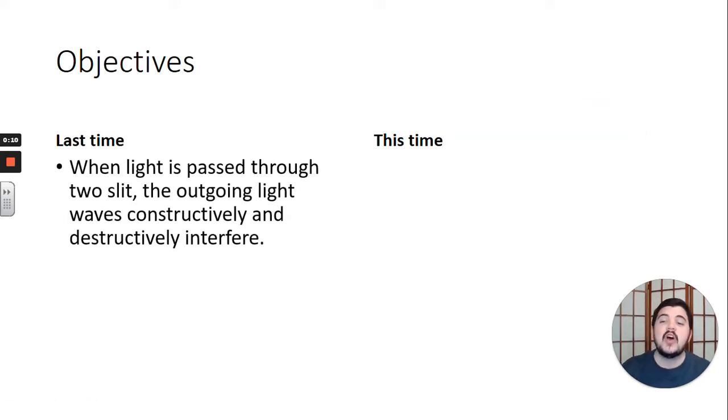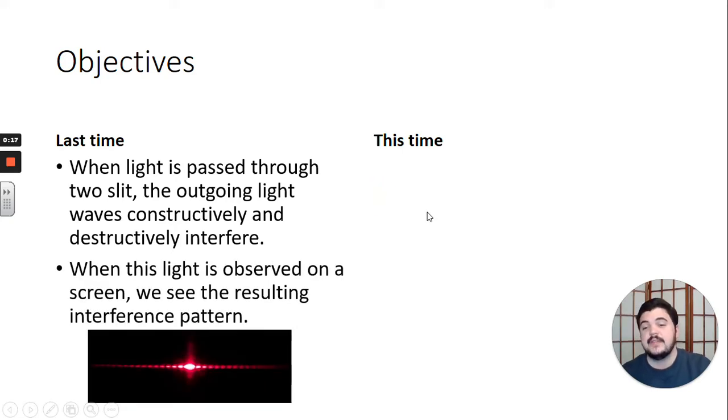Last time, we saw that when light is passed through two slits, the outgoing light waves constructively and destructively interfere. And then when that light is observed on a screen, we see the resulting interference pattern. It's alternating bright, dark, bright, dark, bright, dark.